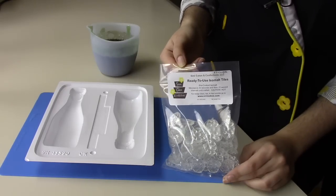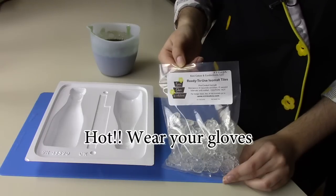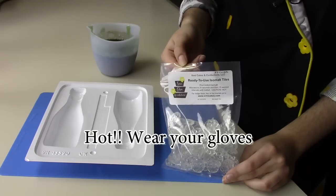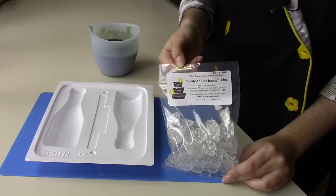Now when the isomalt is melted, it's about 300 degrees, so you have to be very careful because it can cause burns if it comes in contact with your skin. I highly recommend wearing gloves, and that will protect your hands from the heat while you're working with it.